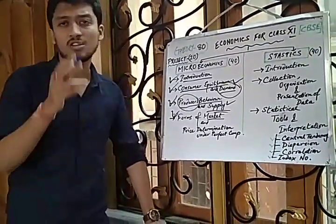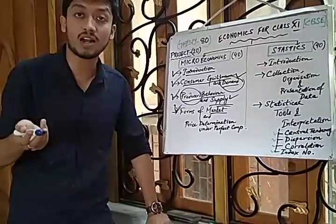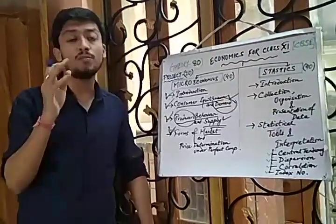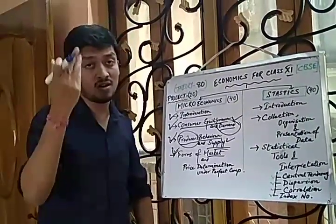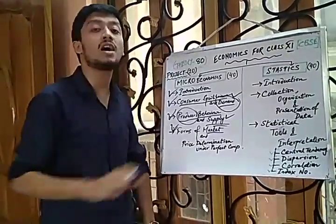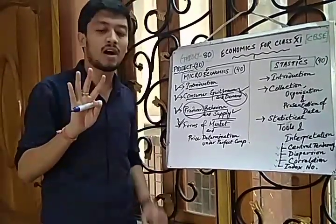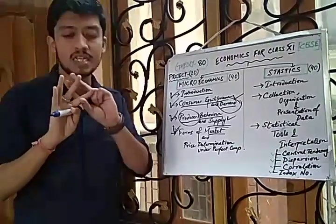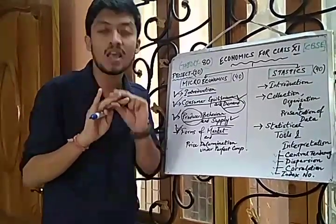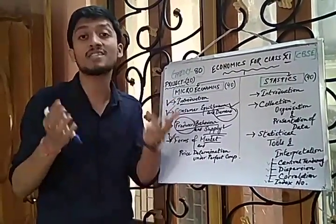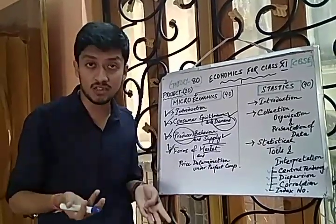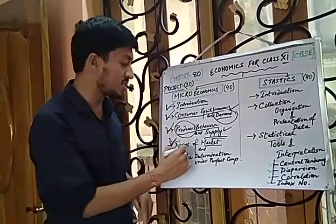Other forms such as duopoly, oligopoly, oligopsony, and monopsony are taught in separate courses like ISC or WB syllabus. But for CBSE students, there are only four types of market: perfect competition, monopoly, monopolistic competition — which is a hybrid or combination of the two — and oligopoly, where a few big sellers sell their commodity to many consumers. Their characteristics, features, operations, and best examples are all covered in this chapter.